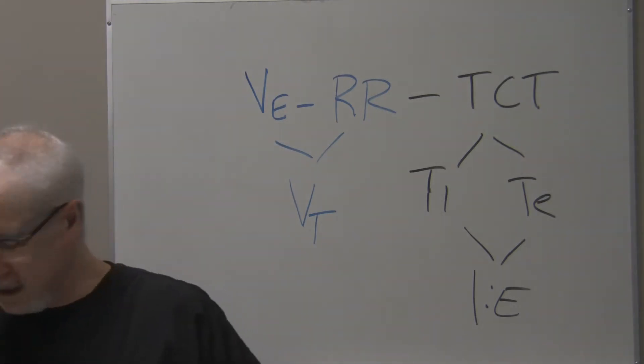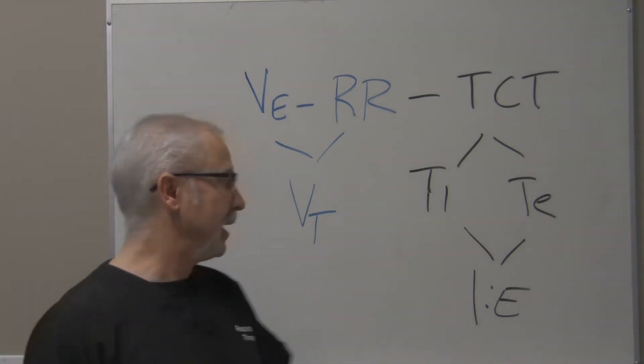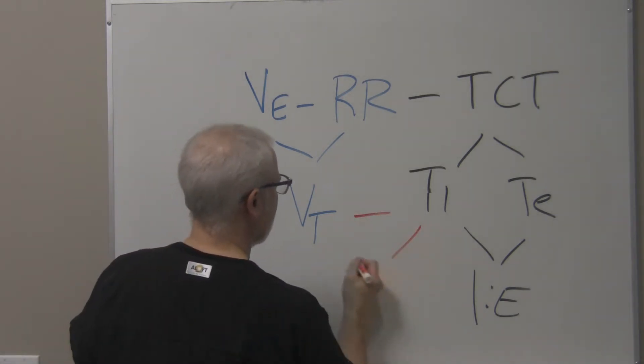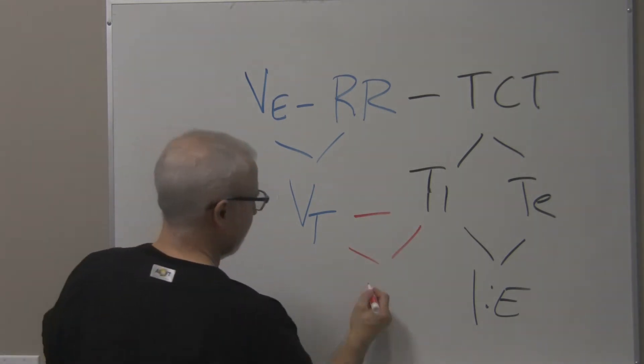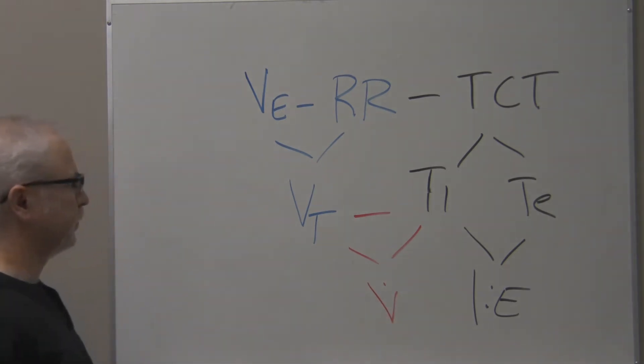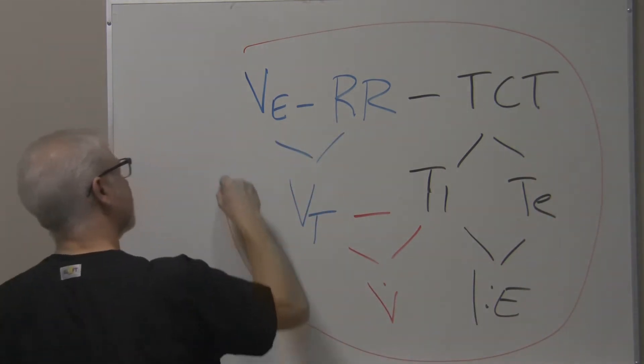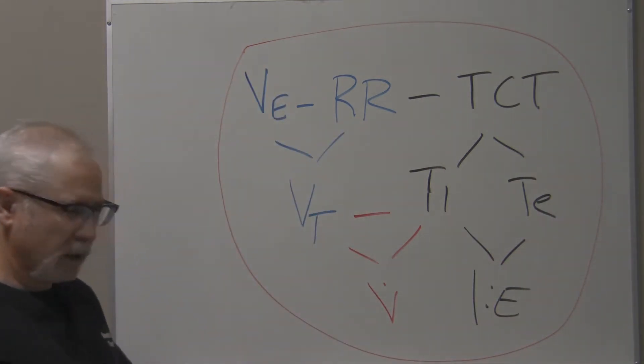And that is the relationship of tidal volume, Ti, and flow rate. So here, in essence, just with the basic ventilation dynamics, is the relationship all coming together, and we're going to use a bunch of arrows here to see what happens.